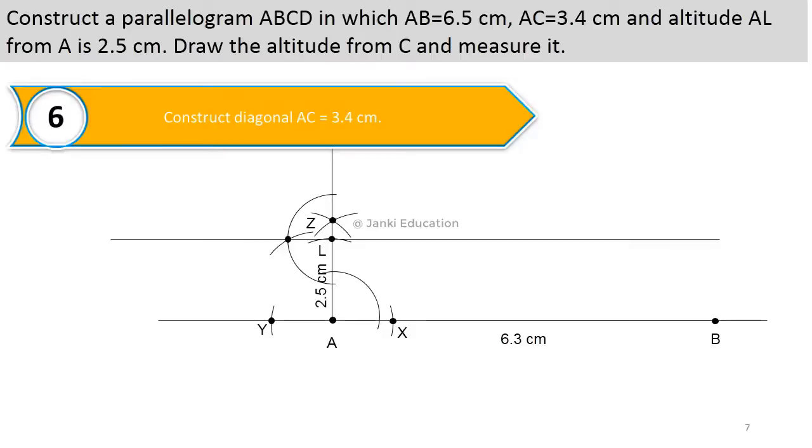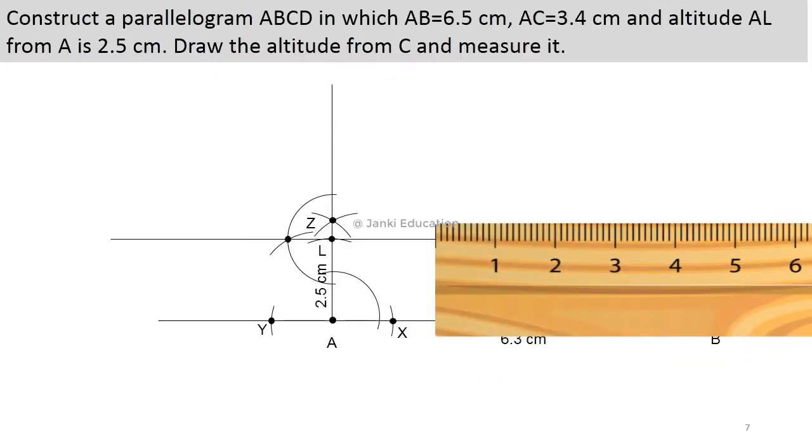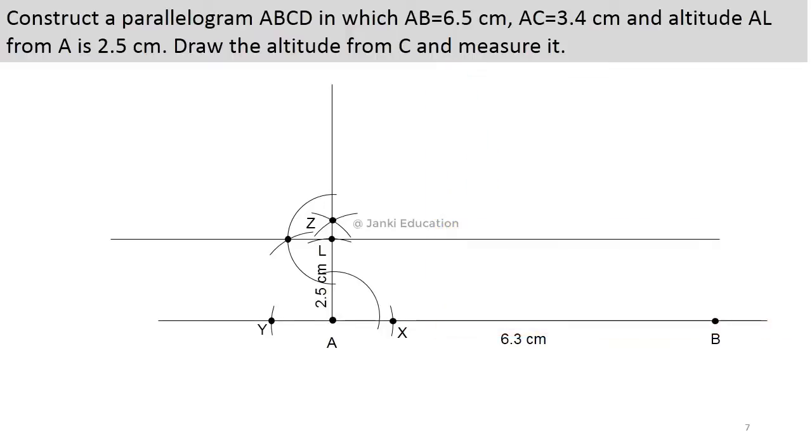So when we are having a measurement of diagonal AC, we'll be taking a radius of 3.4 cm and marking an arc on the newly constructed parallel line. That will be our new point C.